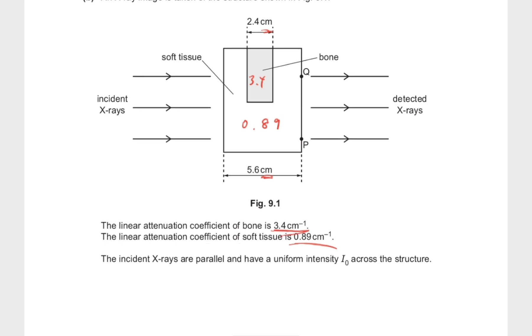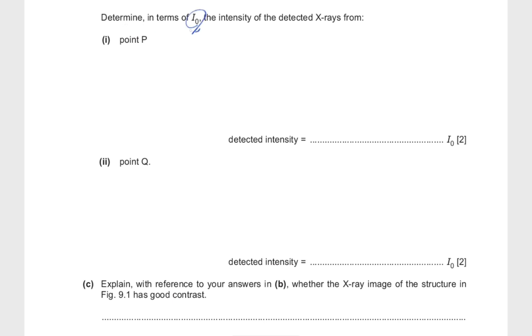They tell us that the incident x-rays are parallel and have a uniform intensity I₀ across the structure. So this means that we don't have to worry about a certain higher concentration of x-rays somewhere else. From these points, we can already start writing down some equations. The intensity of the rays that are detected is the incident intensity, which is denoted by I₀, times e to the power of negative μx. And our μ would be the linear attenuation coefficient, which is 3.4 and 0.89.